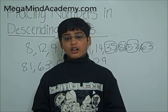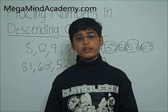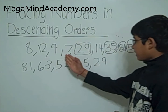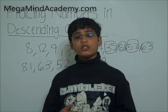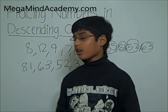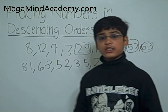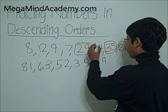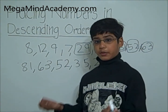Now is there another number closer to 29? Is there any number from 10 to 20? We have 8, 12, 9, 7, and 14. Yes! We have numbers from 10 to 20. They are 12 and 14. Now which one is closer to 29? 14 is closer to 29, so we are going to place 14 first. Then we are going to place 12.